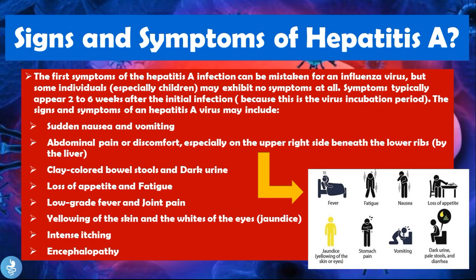The first symptoms of hepatitis A infection can be mistaken for influenza, but some individuals — especially children — may exhibit no symptoms at all. Symptoms typically appear two to six weeks after initial infection due to the virus's incubation period. Signs and symptoms may include sudden nausea and vomiting, abdominal pain especially in the upper right side beneath the lower ribs, clay-colored bowel stools and dark urine, loss of appetite, fatigue, low-grade fever, joint pain, yellowing of the skin and whites of the eyes (jaundice), intense itching, or encephalopathy.